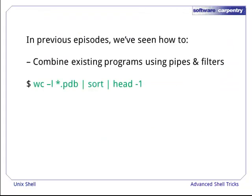In previous episodes we've seen how to do a number of things. Combine existing programs using pipes and filters. For example, counting the number of lines in all PDB files, then sorting those results and picking the top one, i.e. the result with the greatest number of lines.